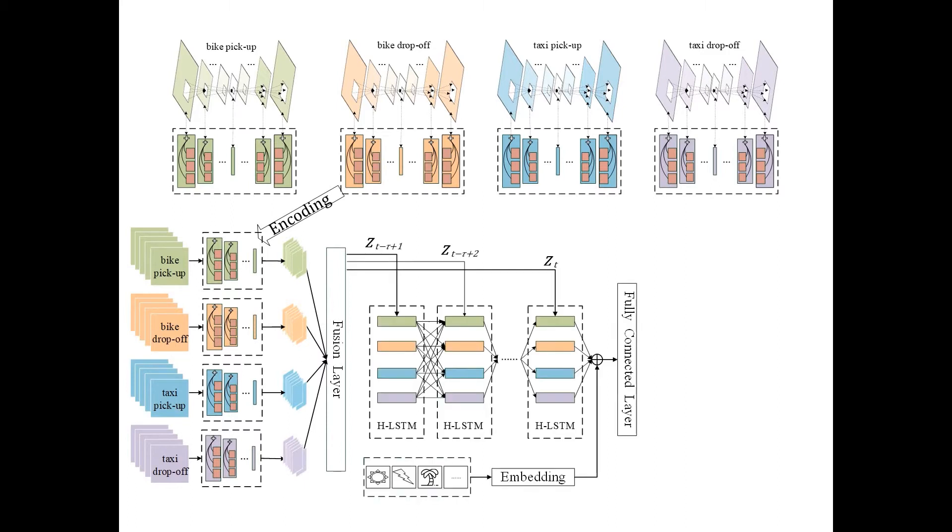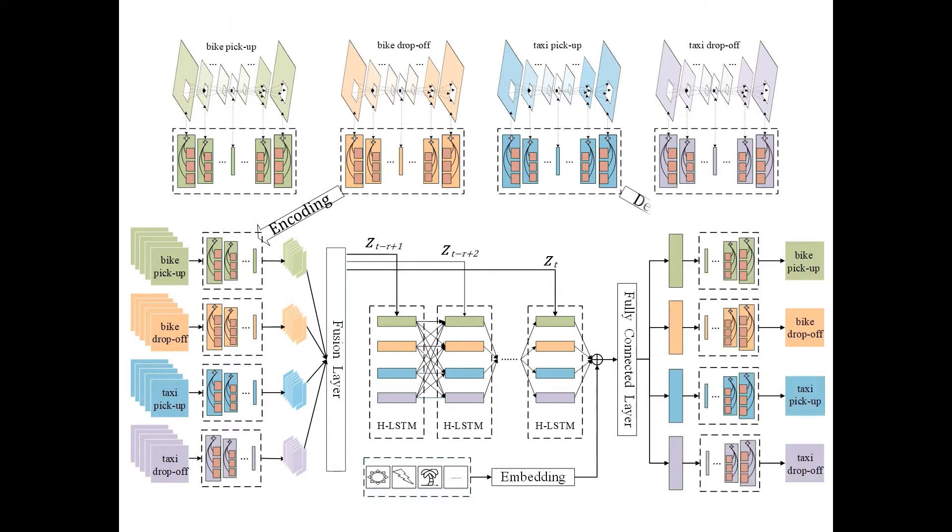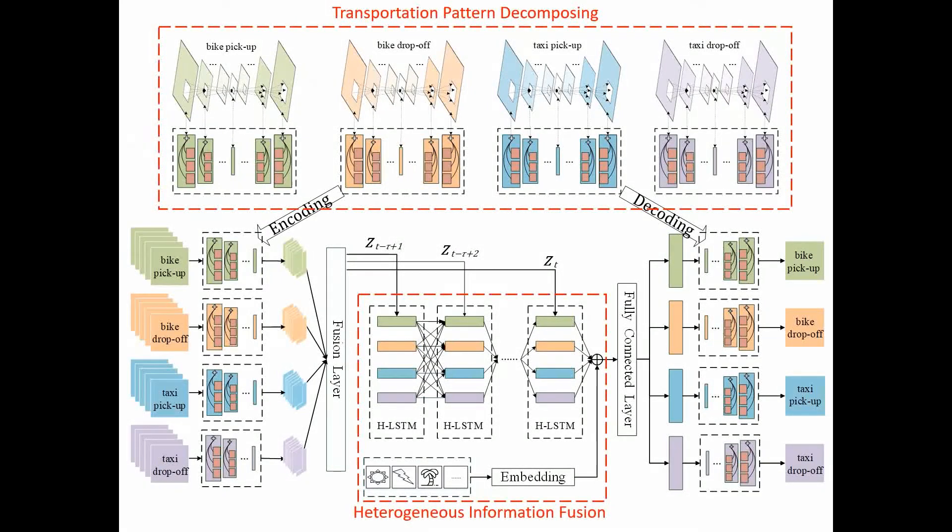Secondly, the heterogeneous LSTM is used to mix the hidden states, and the external factor also taken into consideration. Finally, a fully connected neural network is used to predict the next period's transportation demands together according to the fused information. It is worth mentioning that the transportation pattern decomposing and the heterogeneous information fusion are two strong contributions in our paper.